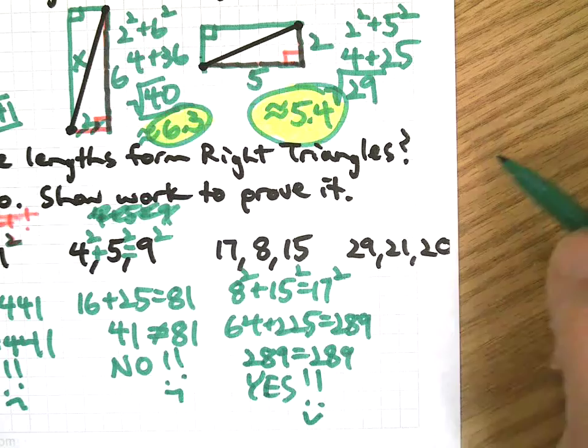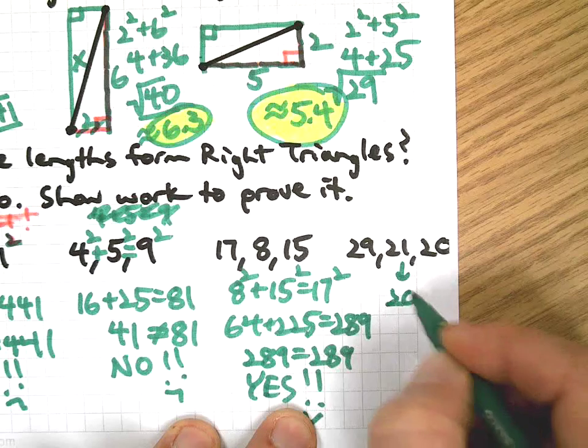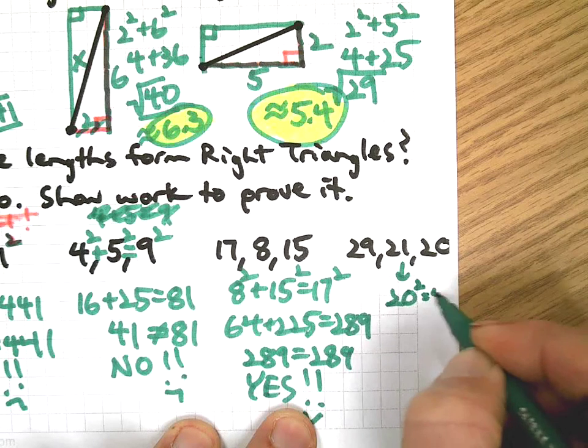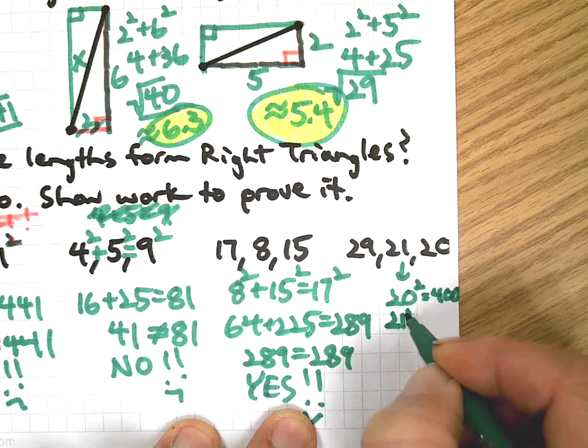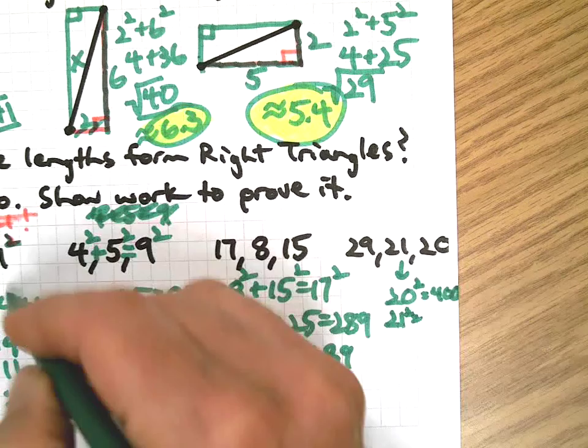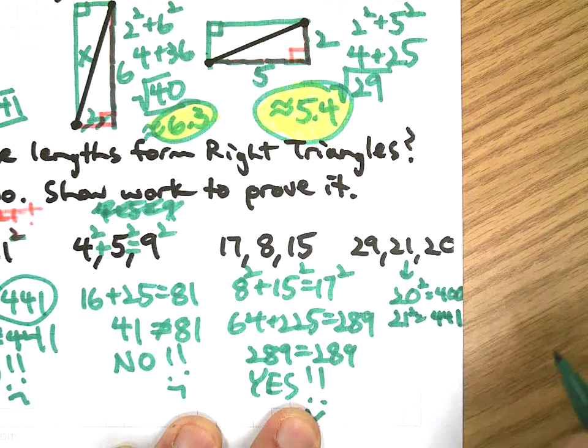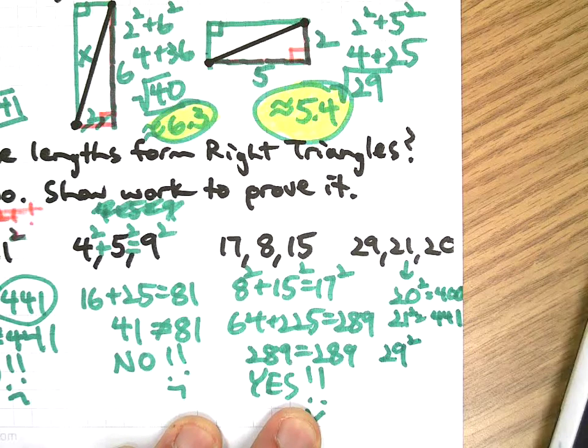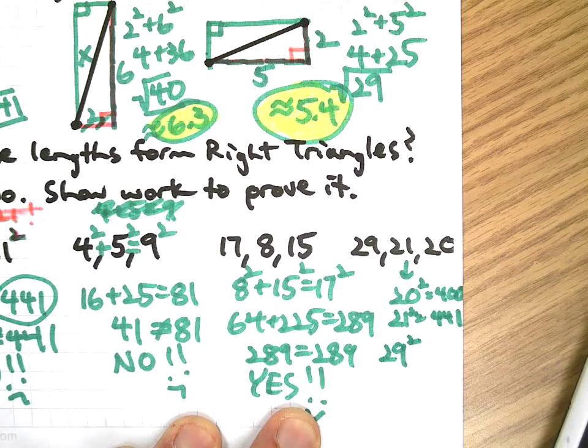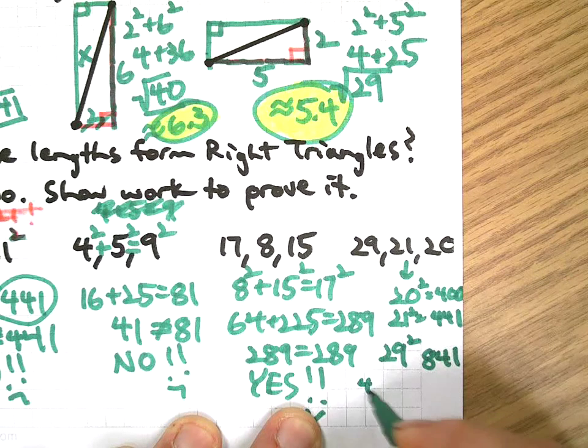So this was frowny face, nose, smiley face yes. And this one's a frowny face because we're going to run out of room, but I'm going to work down instead. So 20 squared, 400. 21 squared - remember we already did it over here, so there's no reason to do it again - 441. 29 squared, 841.